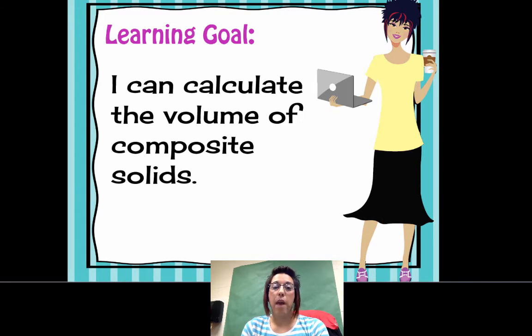Make sure that your math notes are out in front of you and you are ready to work these problems with me. Our learning goal is I can calculate the volume of composite solids. So that means those solids that there are two separate parts. We can break them apart, calculate their volumes, and then add the volumes together.